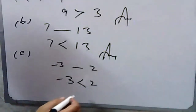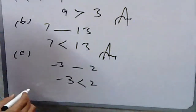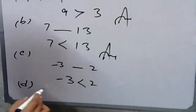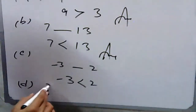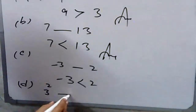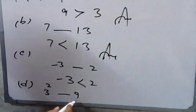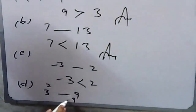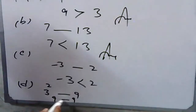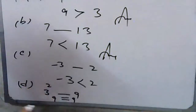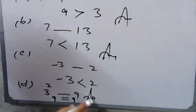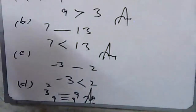In part d: 3² dash 9. Three squared means three times three equals nine, so both are equal. You put the equality sign here: nine equals nine.